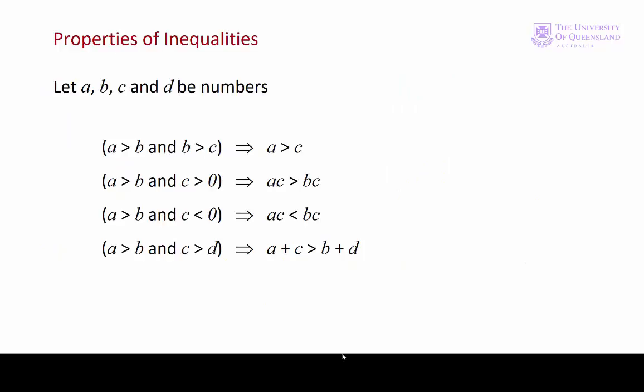Here are some important properties of inequalities. The first is the transitivity property. If we have a greater than b and b greater than c that implies that a is greater than c. If we have a greater than b and c is greater than 0 and so c is a positive number that implies that ac is greater than bc. On the other hand if c is a negative number and a is greater than b then ac will be less than bc. So we reverse the direction of the inequality.